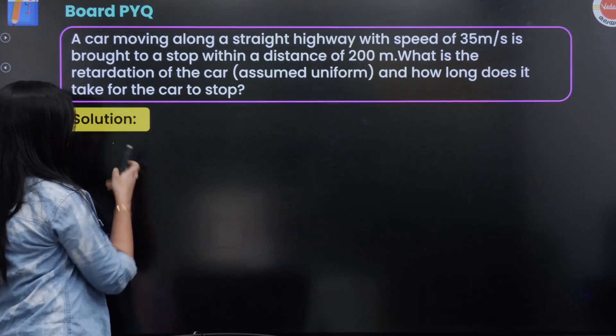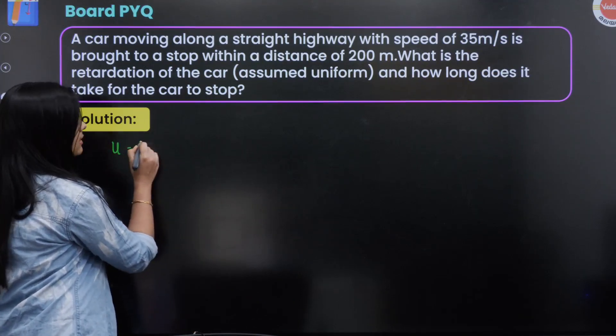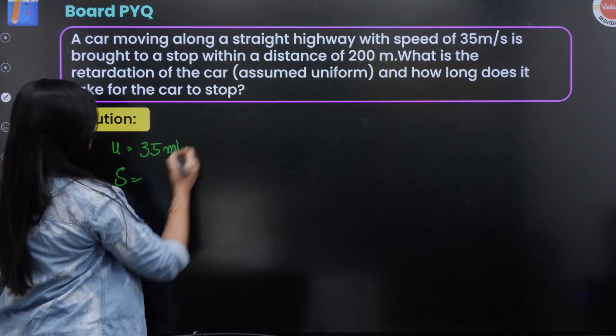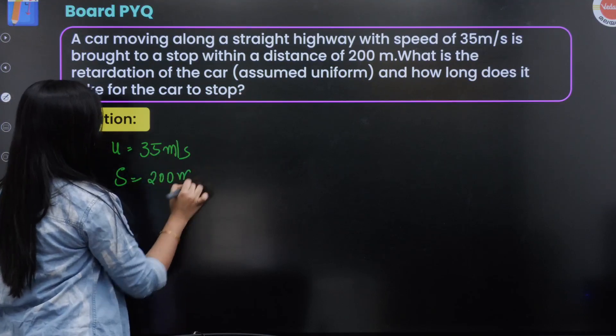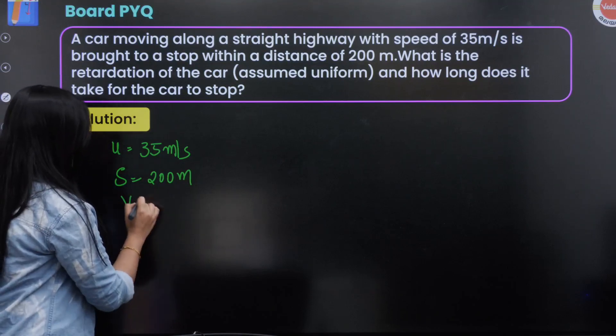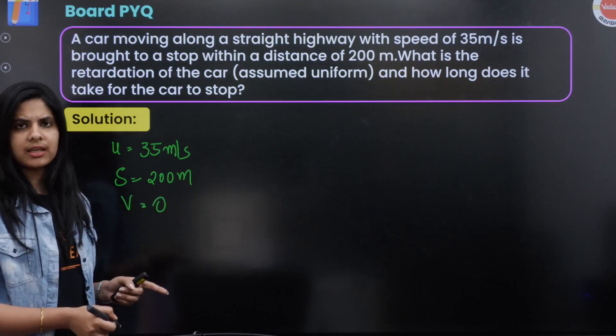The given values are: initial velocity u equals 35 meters per second, distance s equals 200 meters, and when the car stops, final velocity v equals 0 meters per second.